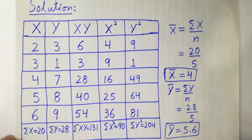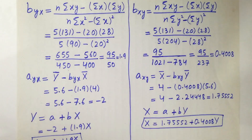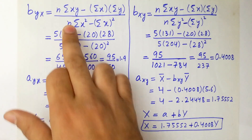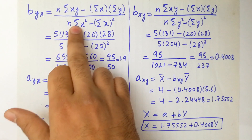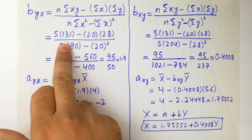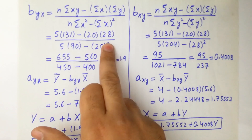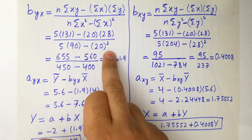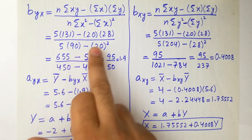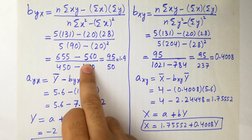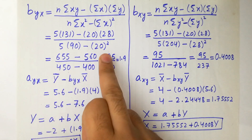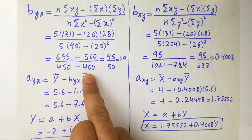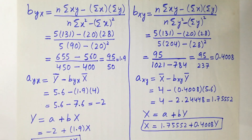Now calculate b_yx. Using the formula: b_yx = (n·Σxy − Σx·Σy) / (n·Σx² − (Σx)²). Substituting: n=5, Σxy=131, Σx=20, Σy=28, Σx²=90. Numerator: 5×131 − 20×28 = 655 − 560 = 95. Denominator: 5×90 − 20² = 450 − 400 = 50. So b_yx = 95/50 = 1.9.